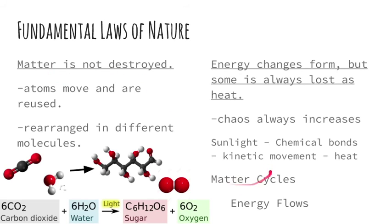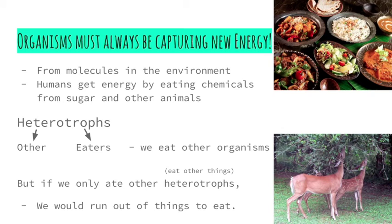So while matter is not destroyed — matter cycles around — energy does get lost. It flows through living systems and then is lost forever. What this means is that organisms must always be capturing new energy. Some organisms are able to capture energy by grabbing onto molecules from their environment. Humans do this because we eat chemicals in our food — we eat sugars, and we eat chemicals from other animals, their proteins and fats. We are called heterotrophs. Hetero means other or different, and troph means eaters, so it means eaters of other things.